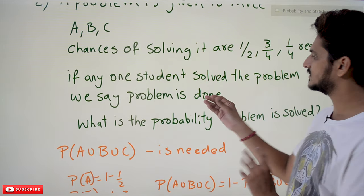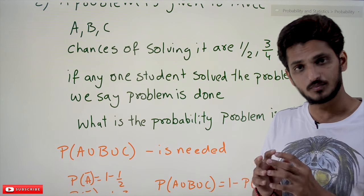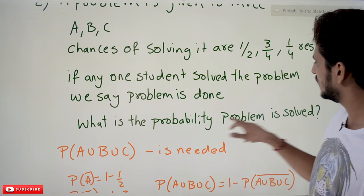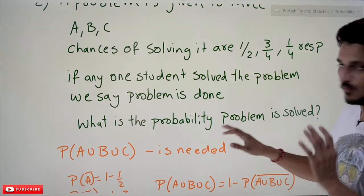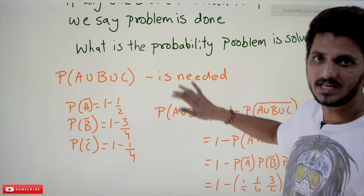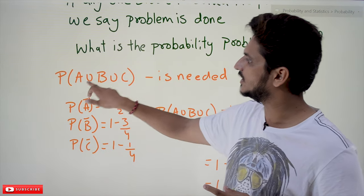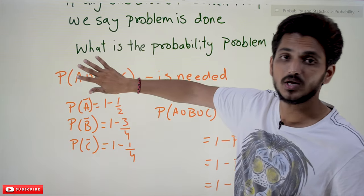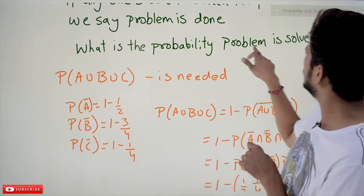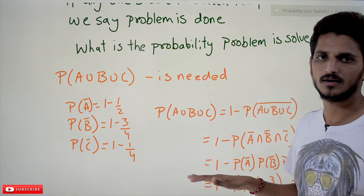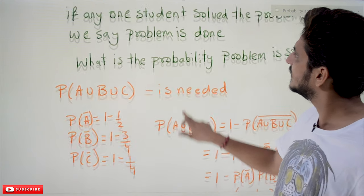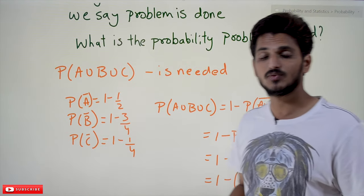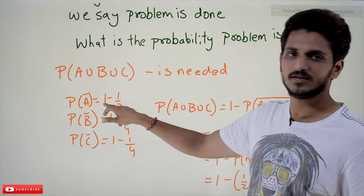If any one student solves the problem, the problem is done — we don't need all of them to solve it. So what is the probability that the problem is solved? We need to identify the probability of A union B union C — either A can solve it, or B can solve it, or C can solve it. Probability of A is 1/2, probability of B is 3/4, probability of C is 1/4.